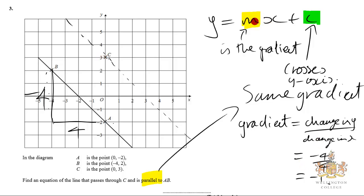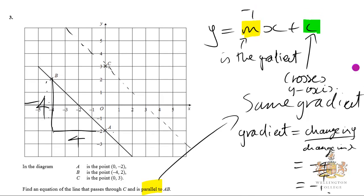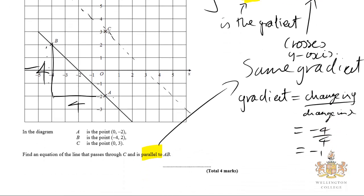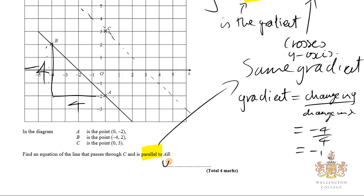So gradient's minus 1, and it crosses C at 3. So our equation is going to be Y equals minus 1 times X plus 3. We don't really need to write the minus 1, we just write Y equals minus X plus 3. And if you want to make it look nice and neat, you can write it as Y equals 3 minus X. Both would give you the right answer.